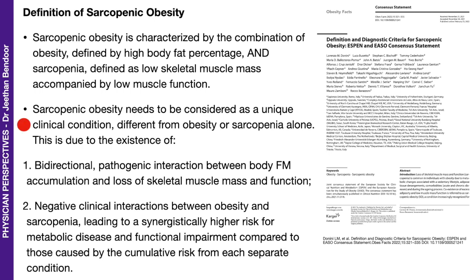Sarcopenic obesity needs to be considered as a unique clinical condition, differently from obesity or sarcopenia alone. That is because of two important things: one is a bidirectional pathogenic interaction between fat mass accumulation and loss of skeletal muscle mass and function; and the second is a negative clinical interaction between obesity and sarcopenia, leading to a synergistically higher risk for metabolic disease and functional impairment compared to each separate condition.